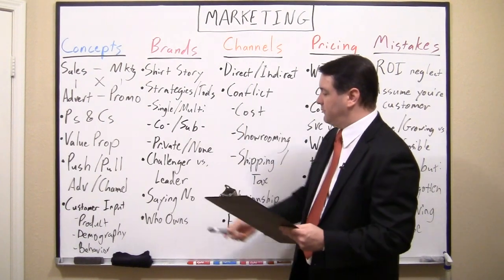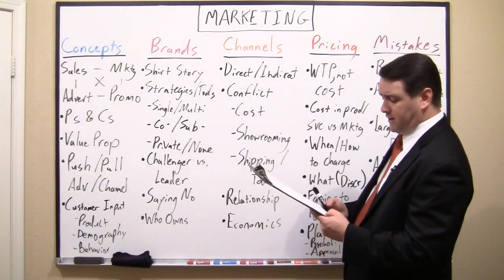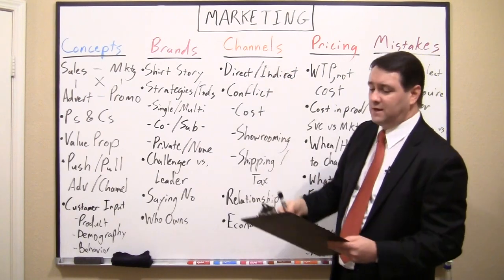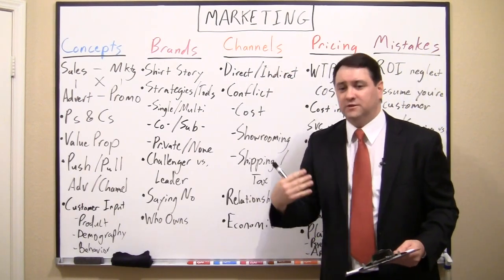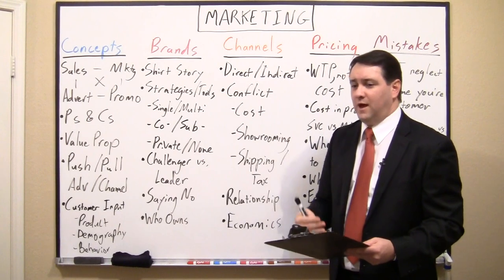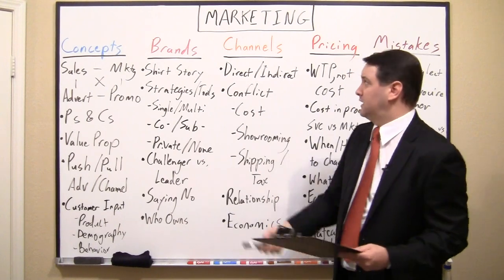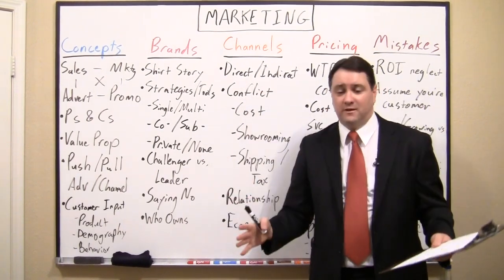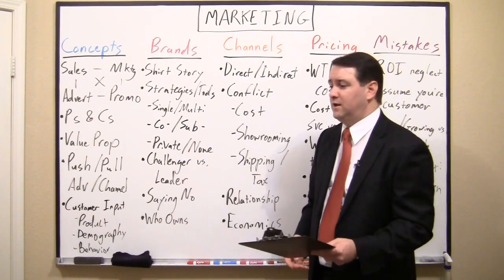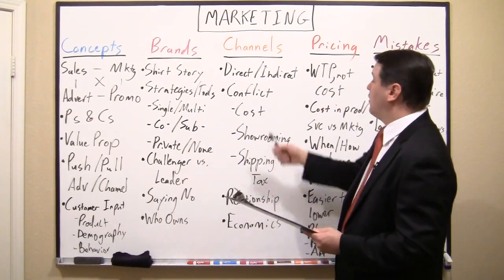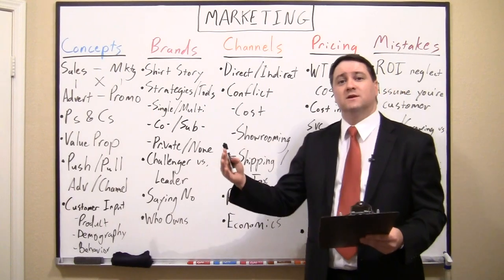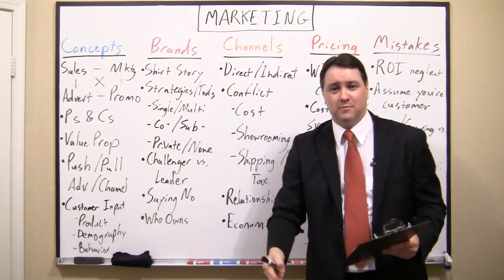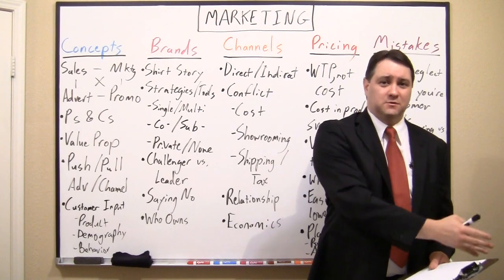Now let's talk about channels — essentially the path to market, how you sell to your customer. You can sell directly: I go to the manufacturer's website and purchase the product directly. Or indirectly: the manufacturer sells to a distributor who sells to a retailer who sells to the customer. Or you take out the middleman and sell direct to a retailer who sells to you. I'm using product examples, but there are analogs for services as well.